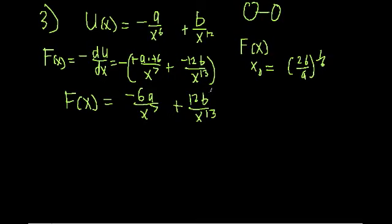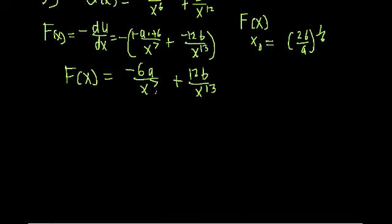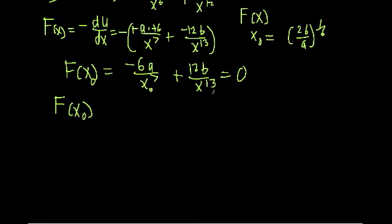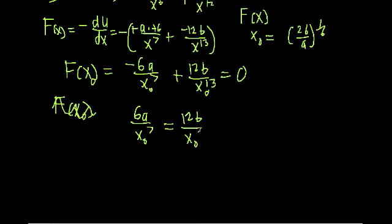Now let's find the equilibrium separation. The equilibrium position is the position where there are no net forces, so F(x₀) = 0. Setting our force expression equal to zero and bringing the negative term to the other side, we get that 6A over x₀^7 is equal to 12B over x₀^13.